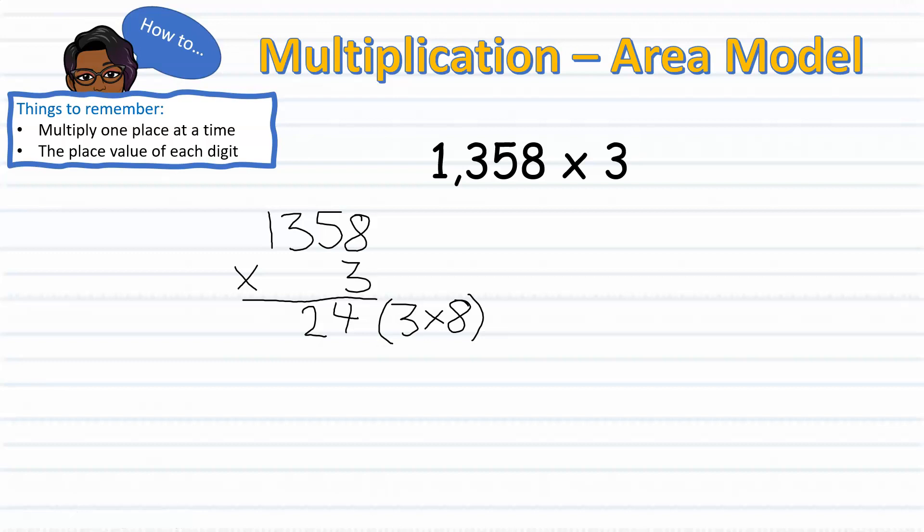Ready to move on to the tens place. Keeping in mind that since the 5 is in the tens place, we must multiply 3 times 50, which gives us 150.